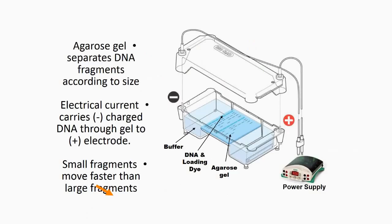Agarose gel separates DNA fragments according to size by using electrical current, carrying negatively charged DNA through toward the positive electrode. Small fragments move faster than large fragments, as presented in the side slide and next slide.